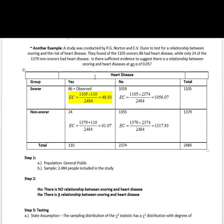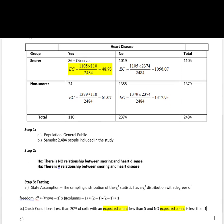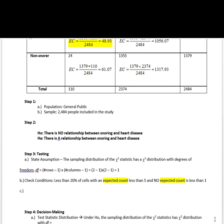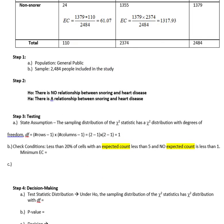After we've calculated all of our expected counts, I can see that the smallest expected count is up here in the snoring and yes at 48.93. So my minimum expected count is equal to 48.93. That will verify both that less than 20% of cells have an expected count less than 5, and none are less than 1.